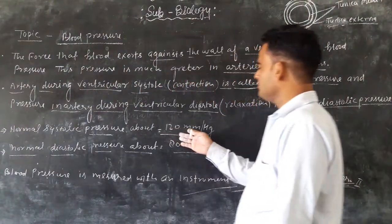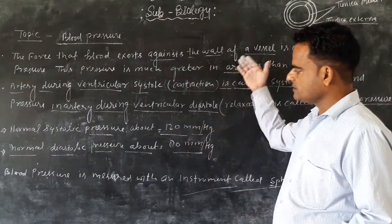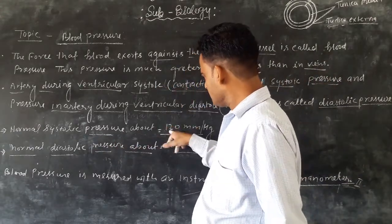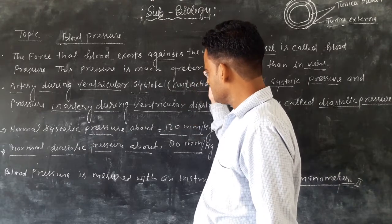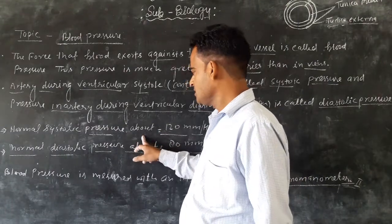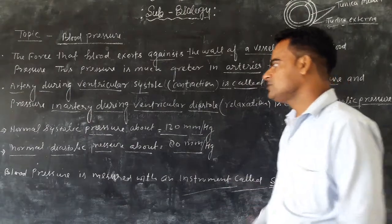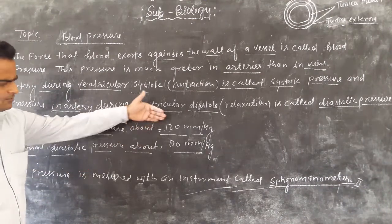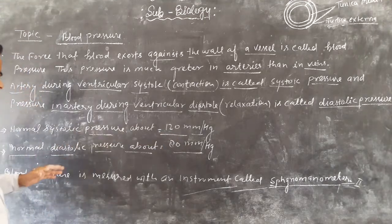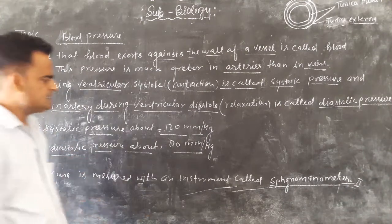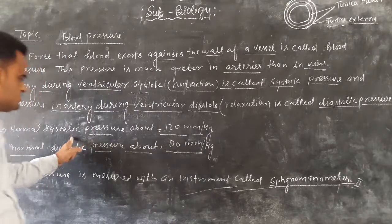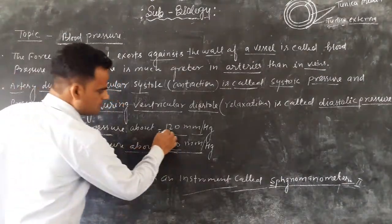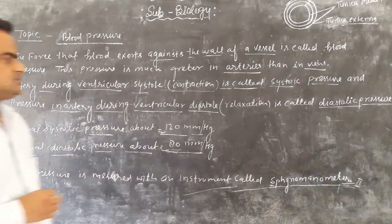Hypertension is the condition of high blood pressure, where blood pressure is in high quantity. When the pressure is above 120 — such as 140, 150, or 160 — that is high systolic pressure called hypertension. Low blood pressure is called hypotension, where the diastolic pressure is low. Low blood pressure is 80 mmHg and high blood pressure hypertension is above 120 mmHg, measured by the sphygmomanometer.